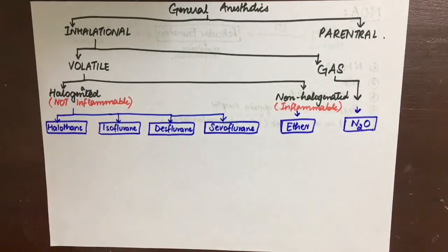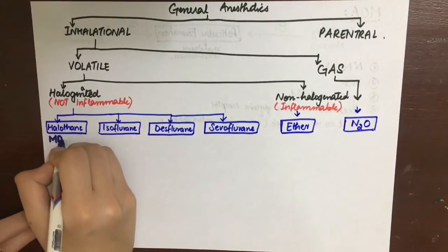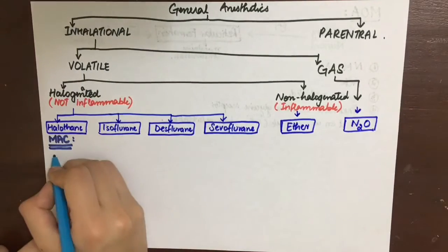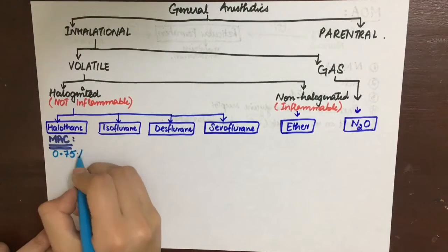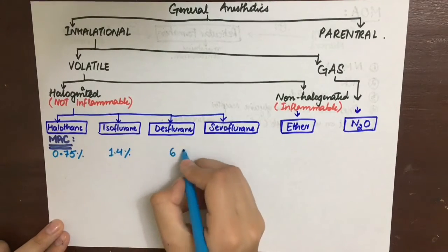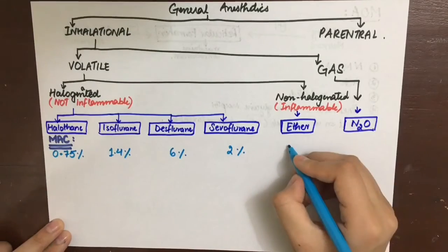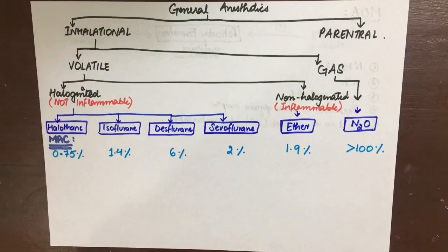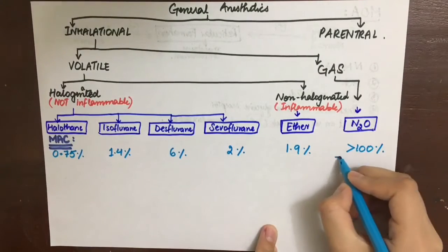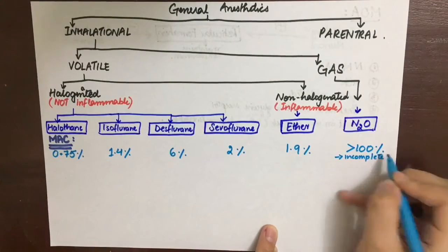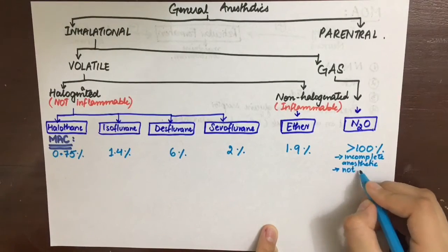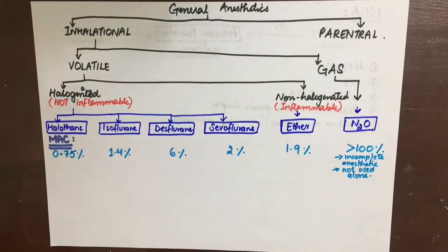We'll do a comparative analysis of all these general anesthetics on the basis of some properties. The first is the MAC value. I'm going to write all of the MAC values for all of these general anesthetics and then you can see which one is the most potent and which one is the least potent. On the basis of these MAC values, we come to know that nitrous oxide is an incomplete anesthetic. It is not potent and surgery cannot be performed under this alone. We have to mix it with some other anesthetic to do that.